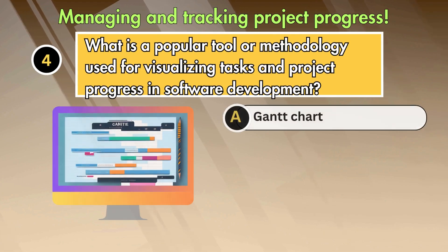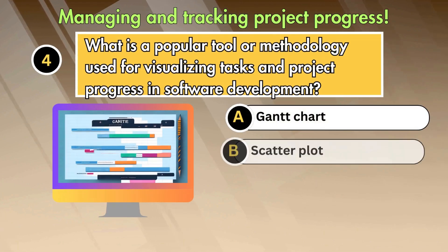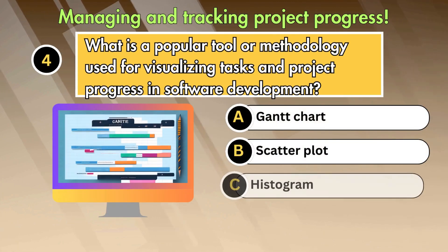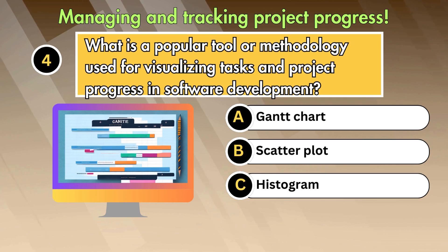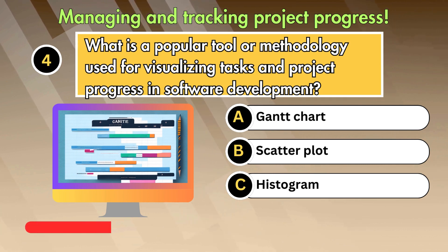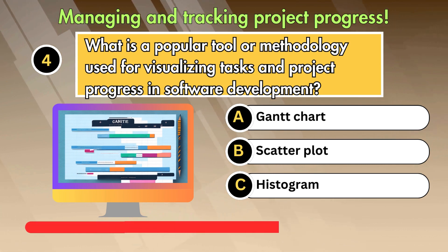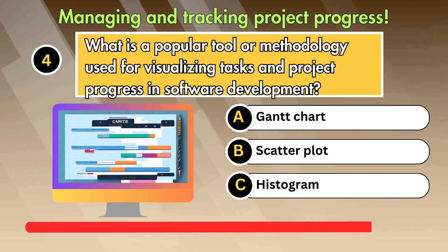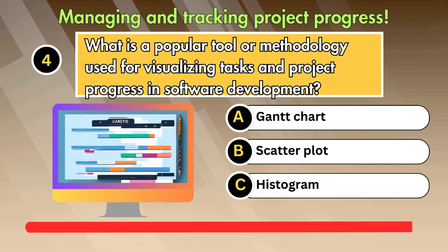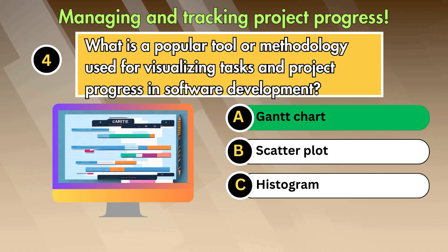What is a popular tool or methodology used for visualizing tasks and project progress in software development? Option 1: Gantt chart. Option 2: Scatter plot. Option 3: Histogram. Answer is Gantt chart.